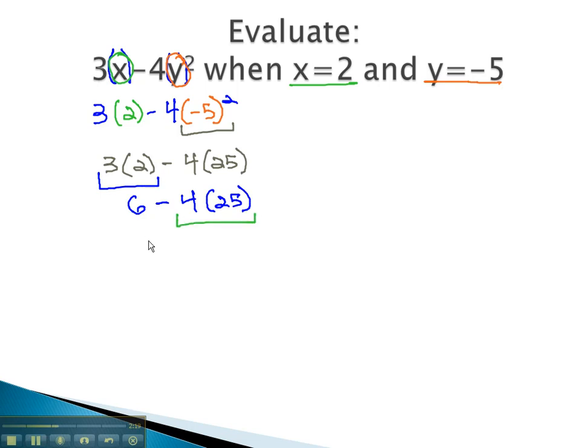Continuing to multiply from left to right, we get 6 minus 100. And finally, when we add the opposite, 6 and negative 100, the negative is bigger and when we subtract, we get 94 or negative 94 for our solution.